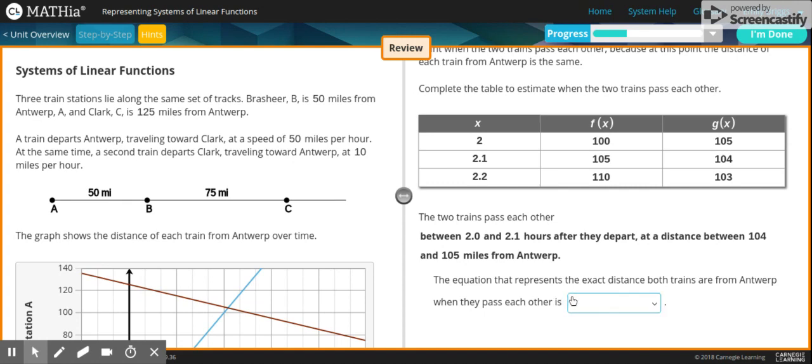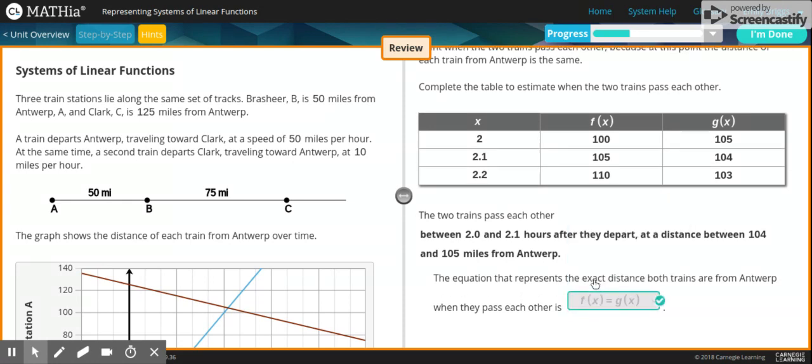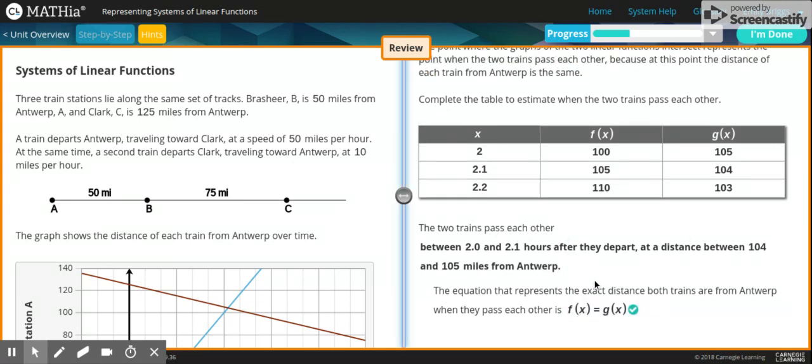The equation that represents the exact distance both trains are from Antwerp when they pass each other is f of x equals 105, g of x equals 104, f of x plus g of x equals 105, or f of x equals g of x. And in this situation it would be f of x equals g of x because they're passing at the same time so they have to meet each other so they both have to equal each other. So I hope this helped you represent the systems of linear functions.